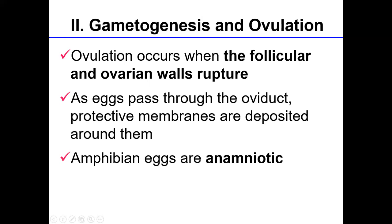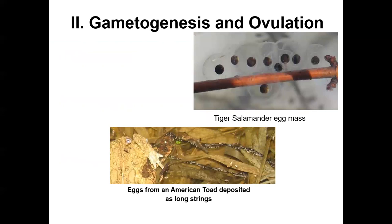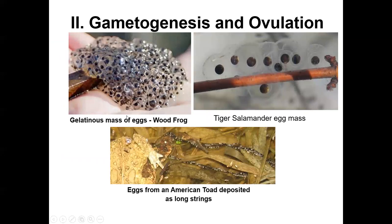It's important to note that amphibian eggs are anamniotic because they lack the extra-embryonic membranes characteristic of reptiles, birds, and mammals. Eggs can be expelled singly, in gelatinous masses, or in strings, but importantly they have no calcified shell. Here you can see the gelatinous egg mass of wood frogs, and the egg mass of a tiger salamander — you can actually see some of the protective membranes, three layers visible to the naked eye, though there are actually quite a few more. Paired strings indicate an egg mass produced by American toads or Fowler's toads.